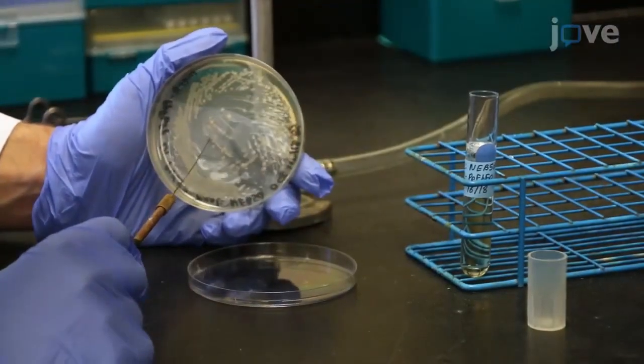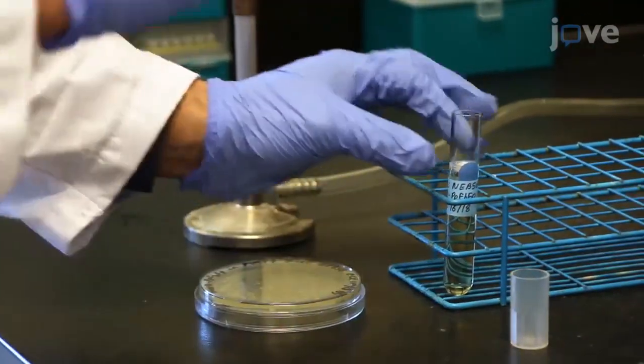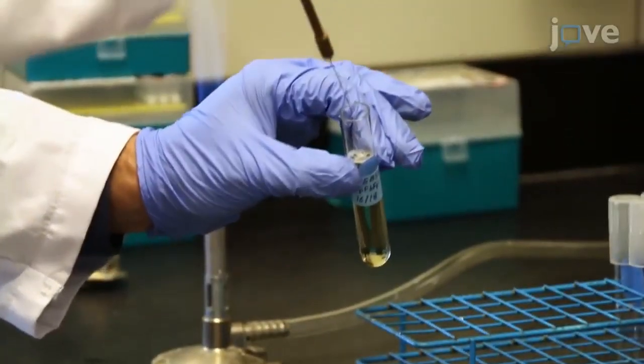Between 4:30 and 5 p.m., inoculate a culture in 10 milliliters of LB with ampicillin and grow overnight at 37 degrees Celsius with shaking at 220 RPM.